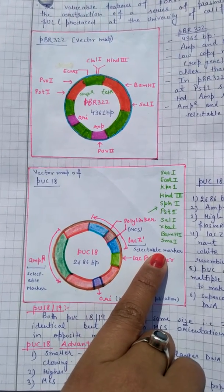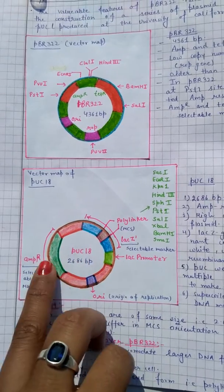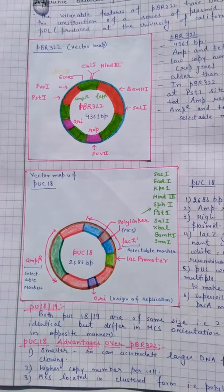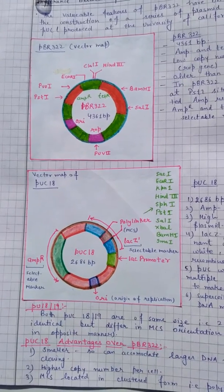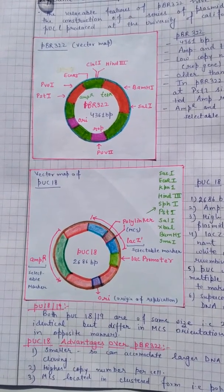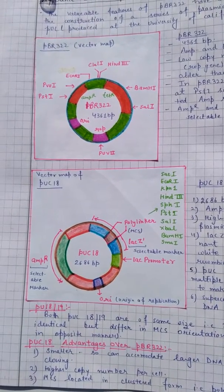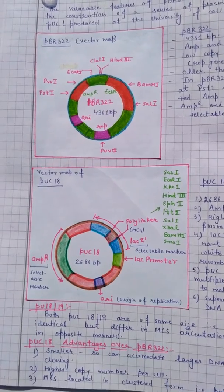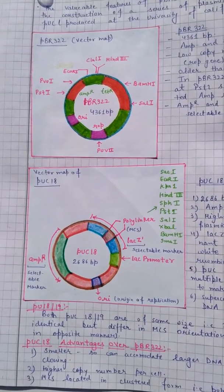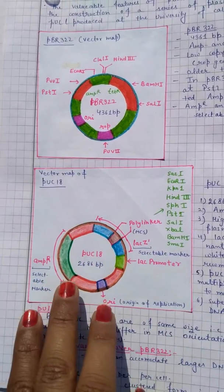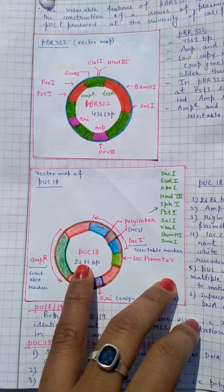In pUC18, instead of tetracycline resistance, lacZ acts as a selectable marker. LacZ is very important as a selectable marker because it helps in an alpha complementation assay. In bacteria, the operon system produces beta-galactosidase enzyme, which acts on the X-gal substrate and gives blue-colored colonies. This helps in blue-white screening of bacteria, with which we can separate recombinant colonies from non-recombinant colonies.